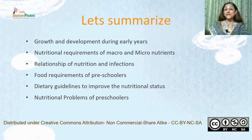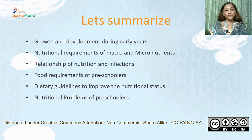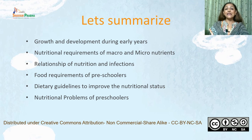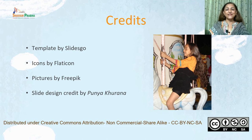To summarize the nutrition care of preschoolers: we studied growth and development during early years, nutritional requirements of macro and micronutrients, the relationship of nutrition and infections, food requirements of preschoolers, important dietary guidelines to improve nutritional status, and nutritional problems of preschoolers. This finishes the nutrition care during early childhood. The next lecture will cover nutrition care of children from 6 to 10 years of age. Thank you.